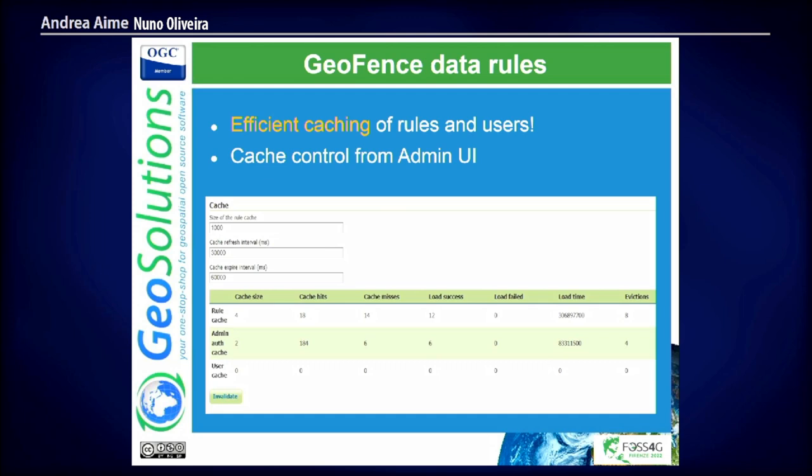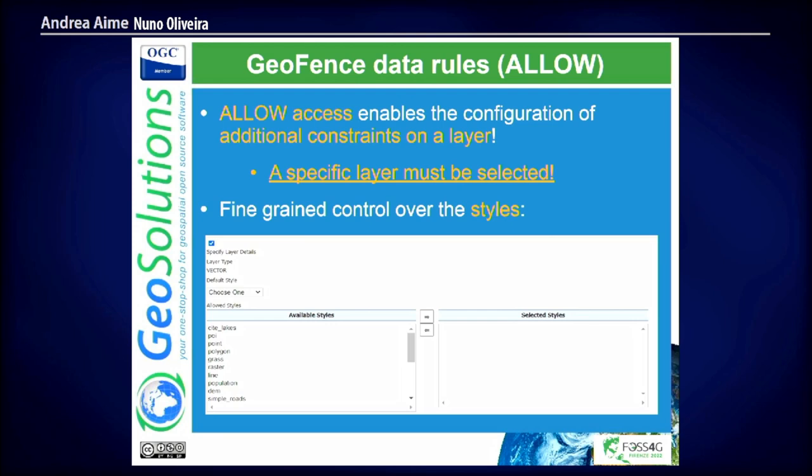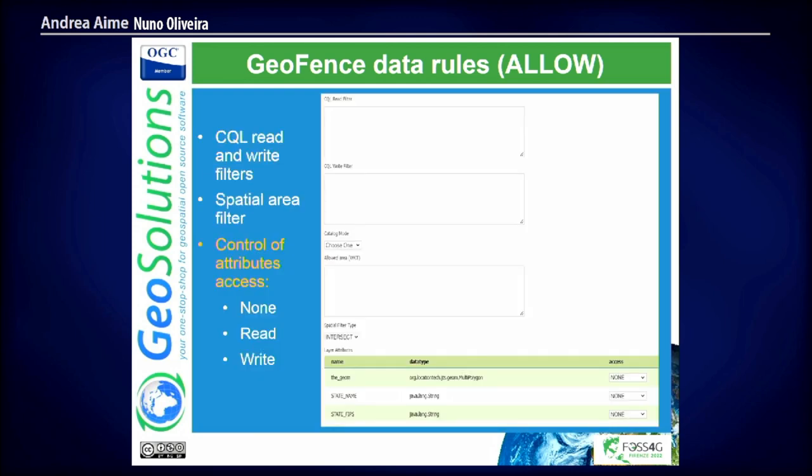Allow rules are quite straightforward to define, but much more powerful than the default GeoServer security system. You can select the styles that are available — very useful for WMS because they control what the final user can see. We can define a SQL reader filter: this filter defines whatever the user can see, it is always sent to the database no matter the request or context — it always appends to the SQL query. When I say database, this applies to shapefiles, MongoDB, whatever data source you are using. And for attributes, we have fine-grained control: none, read, and write.